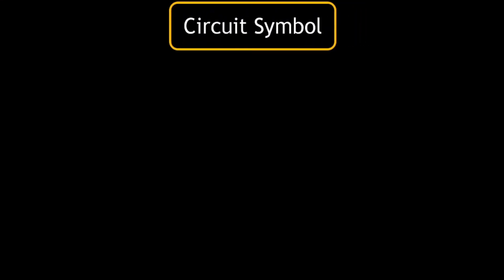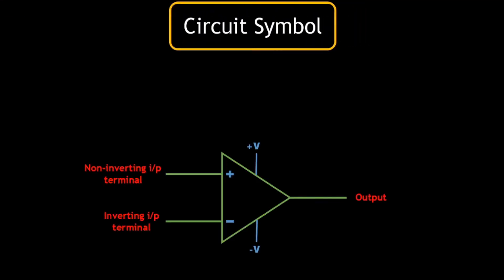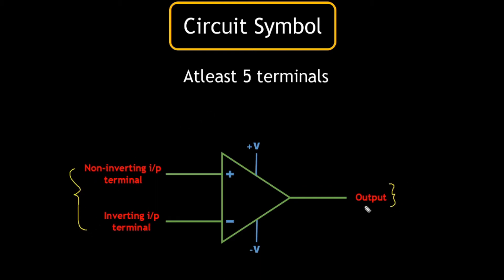Coming to the circuit symbol, an op-amp basically looks like a triangle. It has at least 5 terminals: 2 input terminals, 1 output terminal, and 2 bias voltages.